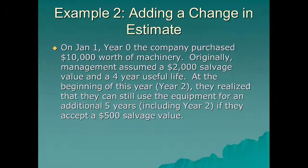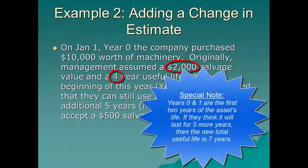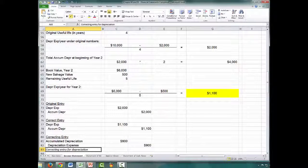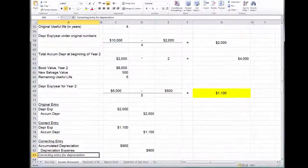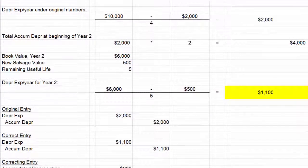For this example, we changed the depreciation estimate. Instead of a four-year total useful life with a $2,000 salvage value, it now has a seven-year estimated useful life with a $500 salvage value. The company had already depreciated for two years, but we didn't go back and change that. We just used that information moving forward to come up with journal entries and calculations.